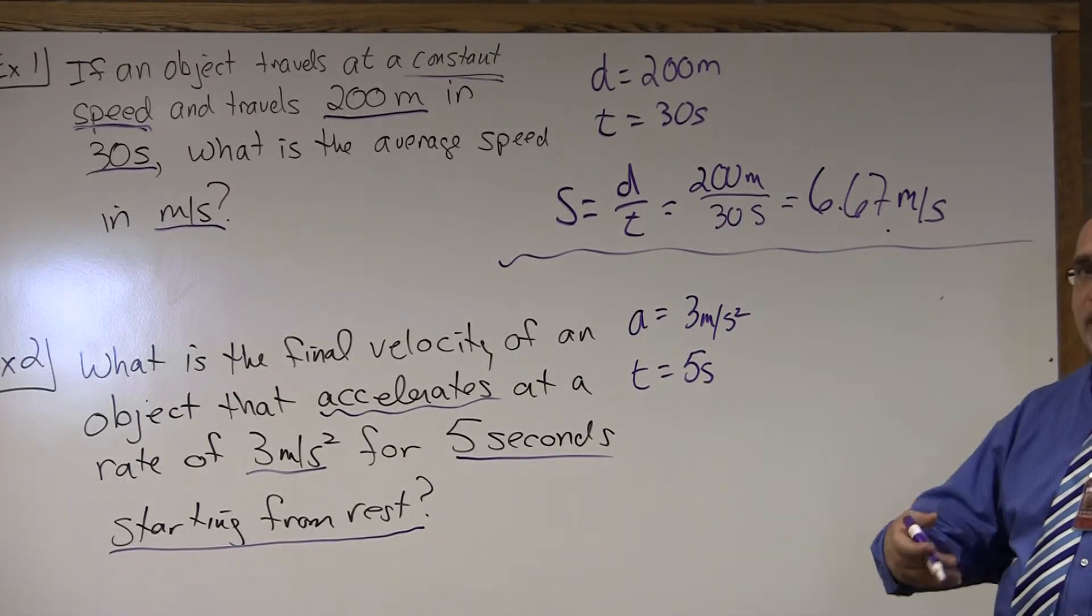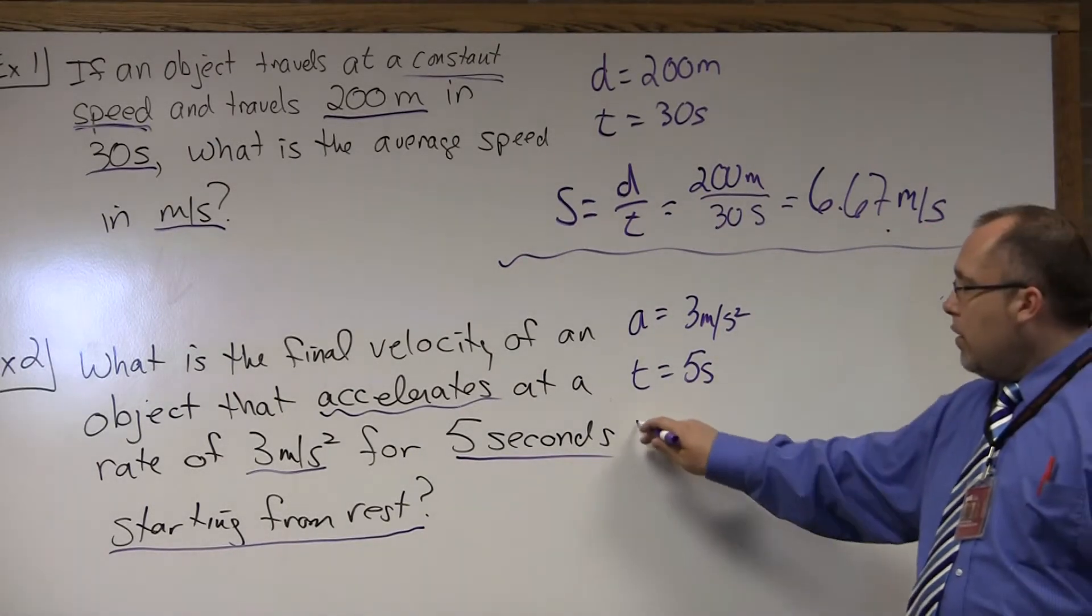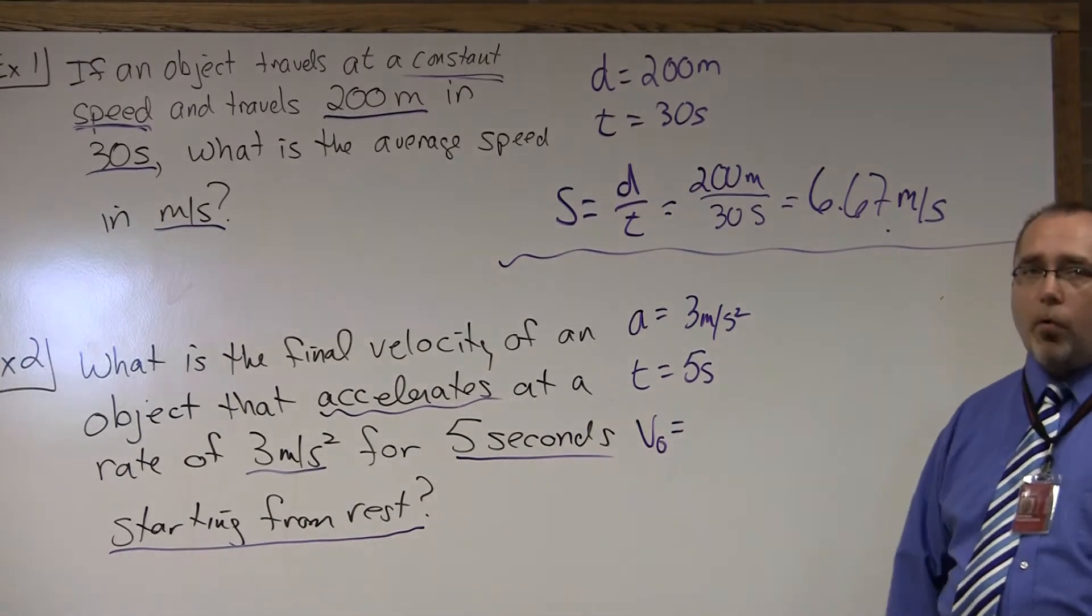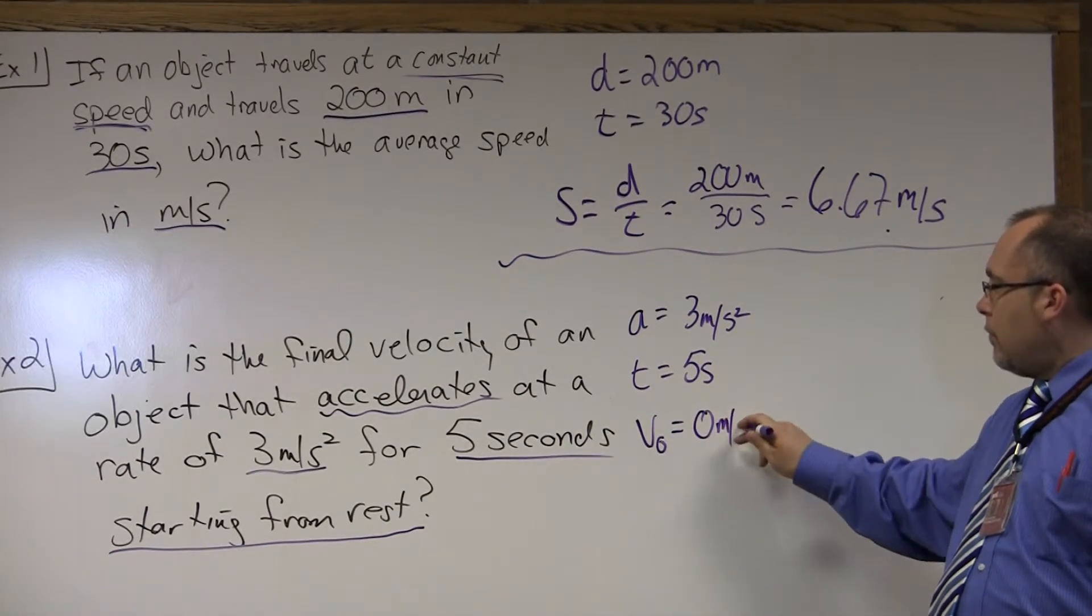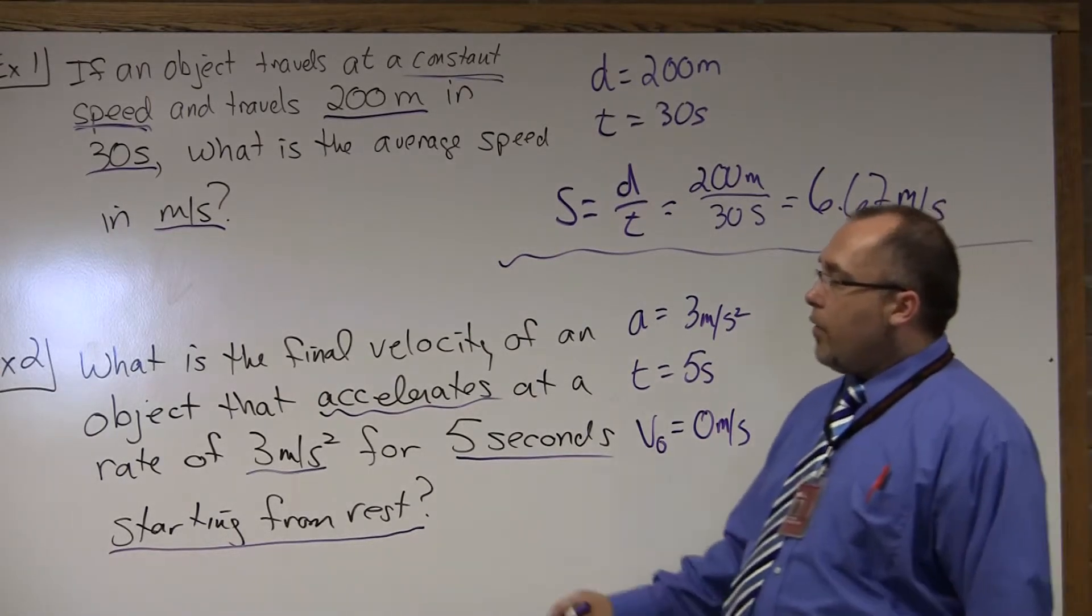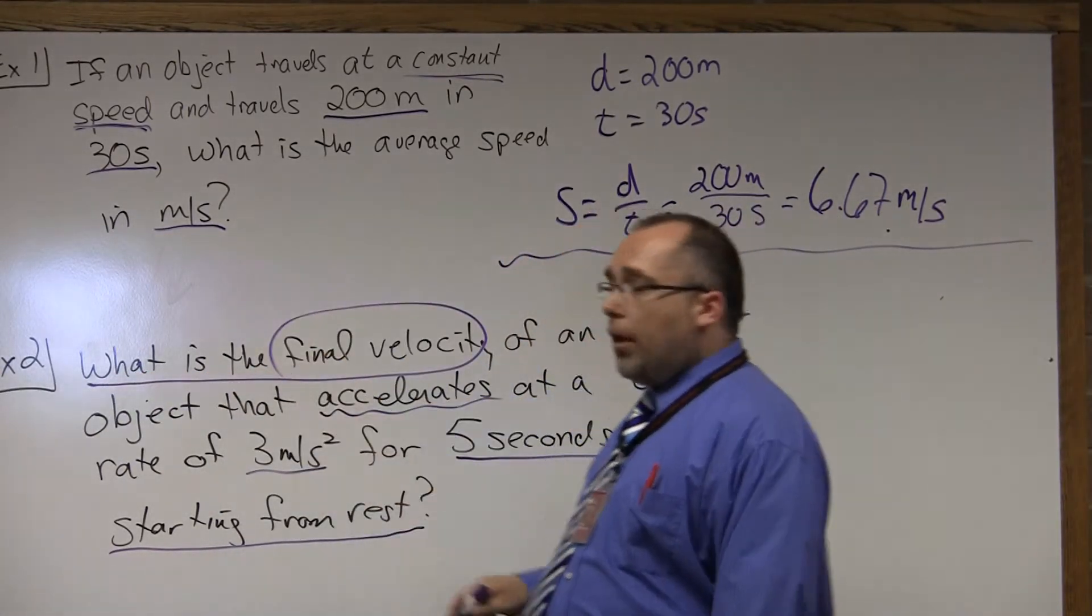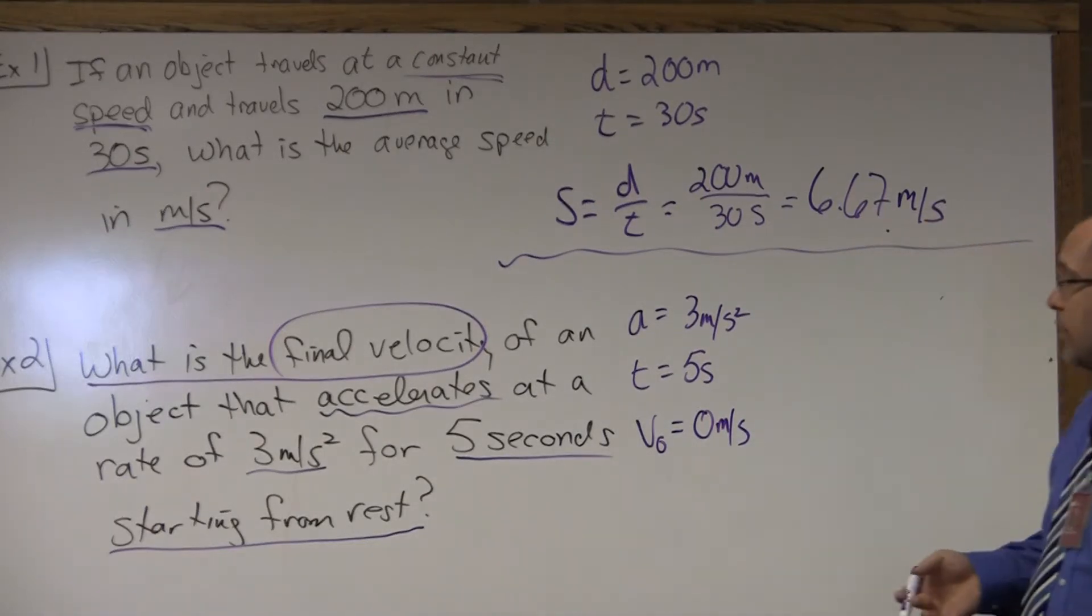And this last part here is also a given piece of information. Starting from rest. Starting is the same as your initial velocity. So, initial velocity, if it's starting from rest, is zero. And we're asking for what? What is the final velocity?